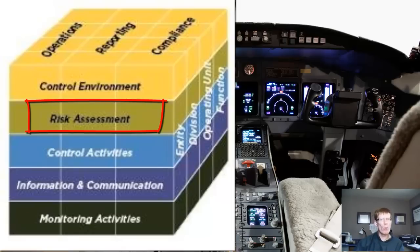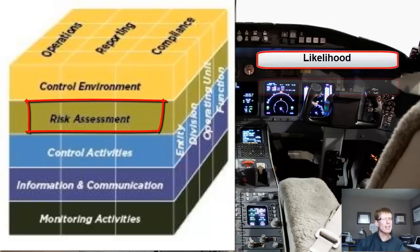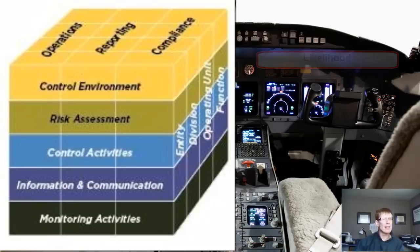A risk assessment requires management to identify all the risks — or said another way, what could go wrong in a transaction cycle? Then management needs to assess the likelihood and significance of a risk occurring to identify those which are critical. And finally, the company develops a course of action to reduce risk to an acceptable level by performing control activities.